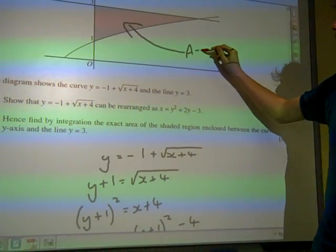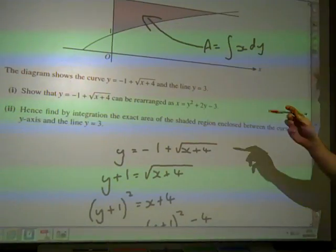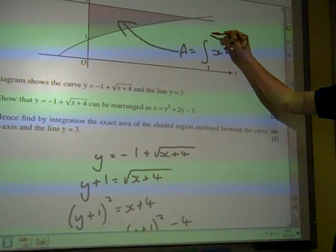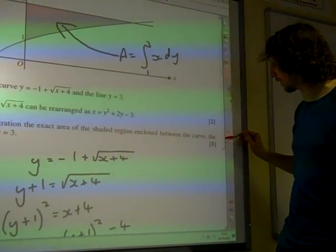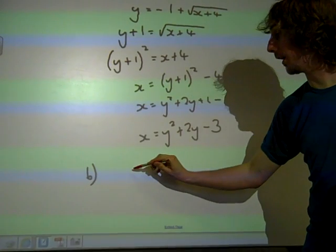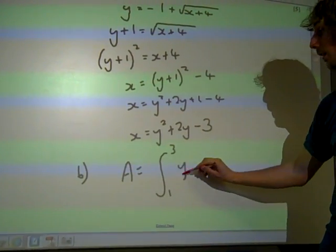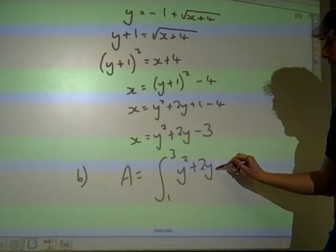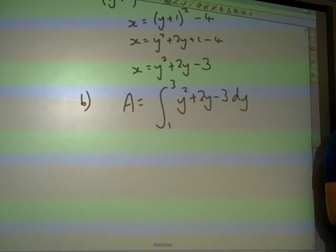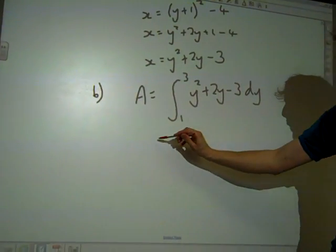That is just the integral of x dy, because it's the other way around. It's against the y-axis, between 1 and 3. And we've got what x is now. So all it wants us to do for part b, part 2, is that the area is the integral between 1 and 3 of y² + 2y - 3 dy. It's not difficult. This is the slight twist as we work in terms of y instead of x.